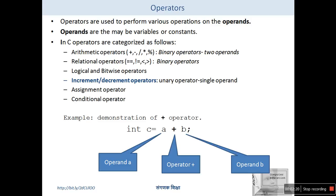In the next category, we have increment and decrement operators. These operators only require one operand, and that's why they are called unary operators. We will discuss these operators in detail in subsequent slides.